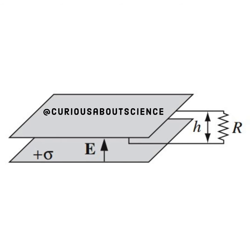Let's draw it out. We have the parallel plate capacitor, with the E field running from the positive plate up. And we see that we have the loop being somewhat in there with the height H.